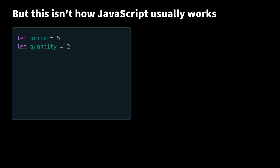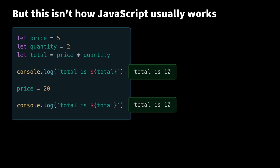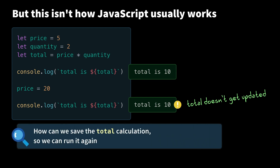So we have a price and a quantity for our example. We have a total. And if I log this out, I'm going to get total is 10. Now if I change price and I log out the total again, what do I get? Total is still 10. But it didn't get updated, right? In a reactivity system, this would get updated. So our first question is, how can we save the total calculation so we can run it again when price or quantity updates?